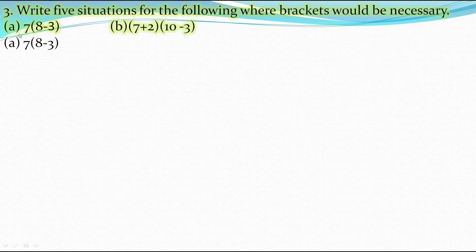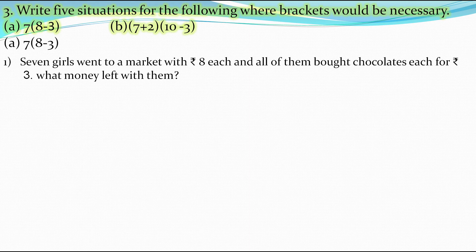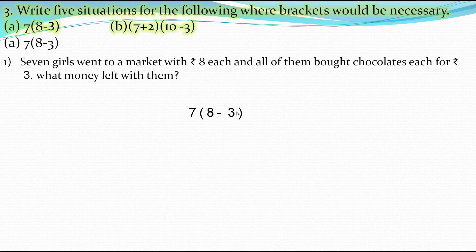Now they have told us to write 5 situations for the following where brackets would be necessary. The first expression is 7 into bracket (8 minus 3). First situation: 7 girls went to a market with rupees 8 each, and all of them bought chocolates each for rupees 3. We subtract 3 from 8 to find the money left, and as there are 7 girls, we multiply with 7. Note that when there is no sign between 7 and the bracket, we assume multiplication.